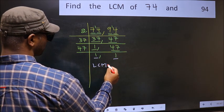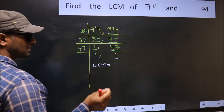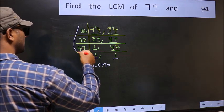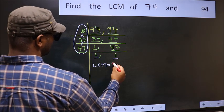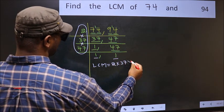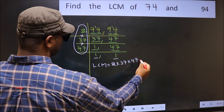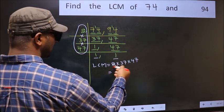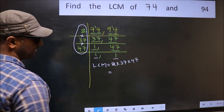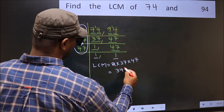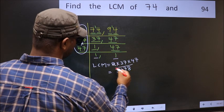Our LCM is the product of these numbers: 2×37×47. When we multiply these numbers, we get 3,478 as our LCM.